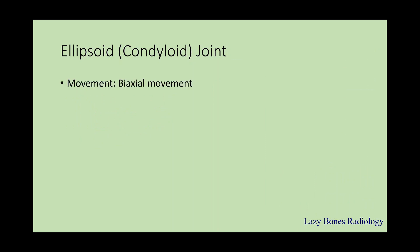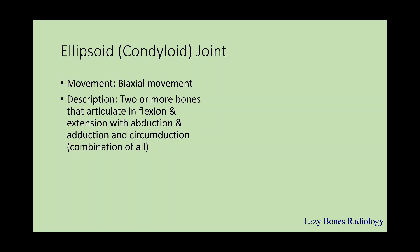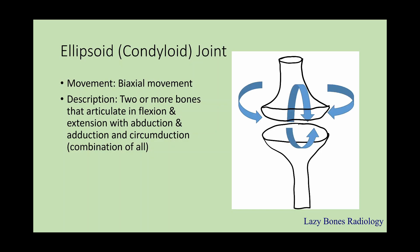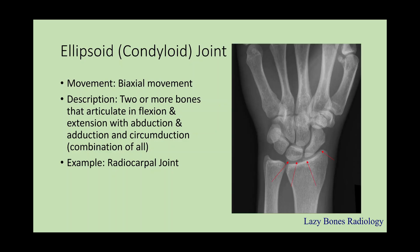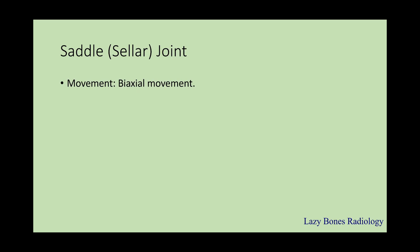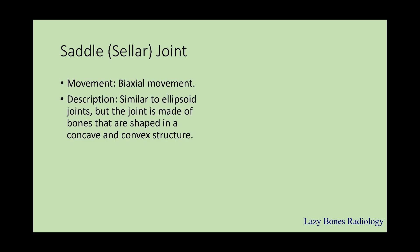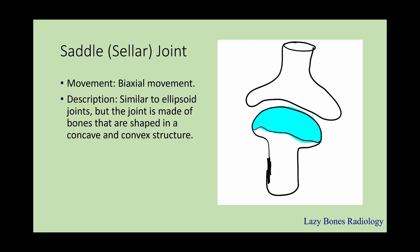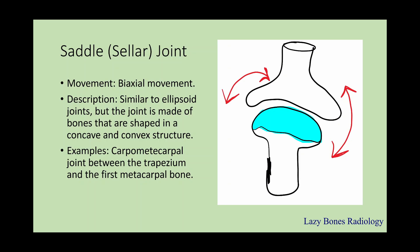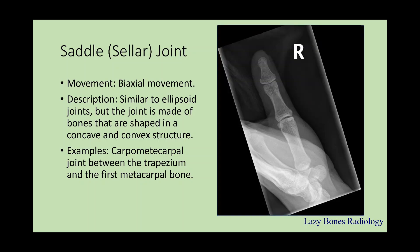Next is the ellipsoid joint, which has biaxial movement — when two or more bones articulate with flexion and extension, abduction and adduction, and circumduction, which is a combination of all of them. A good example is the radiocarpal joint. Next is the saddle joint, also with biaxial movement and similar to the ellipsoid joint, but made of bones shaped with concave and convex structures. An example is the carpometacarpal joint between the trapezium and the first metacarpal bone.